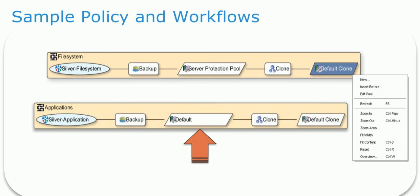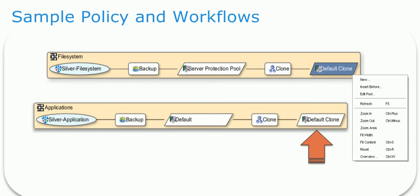In the media pool properties, the user can specify the label template and target device. Clone is the secondary action, and the action wizard will provide clone-specific options here. Default clone is another media pool which is independent of the backup pool. Actions within a workflow will not proceed unless the previous action has finished.